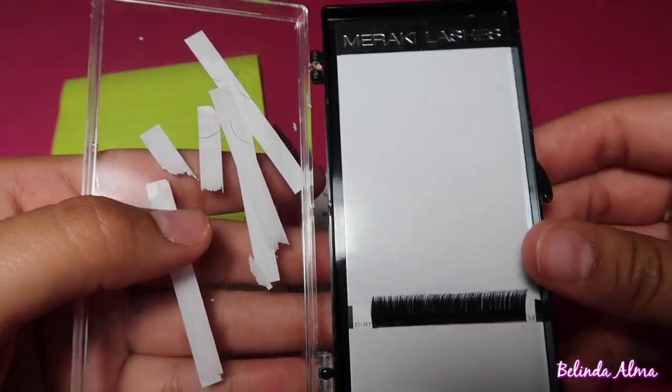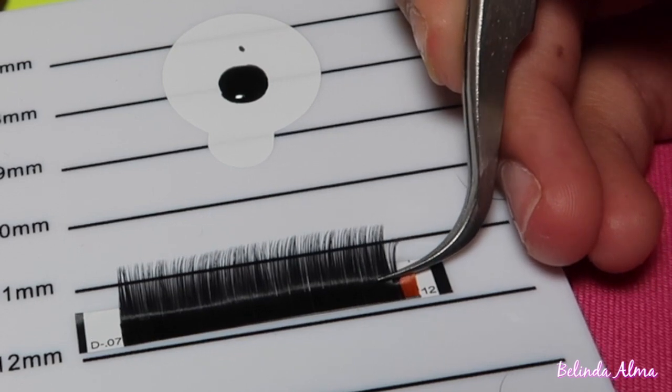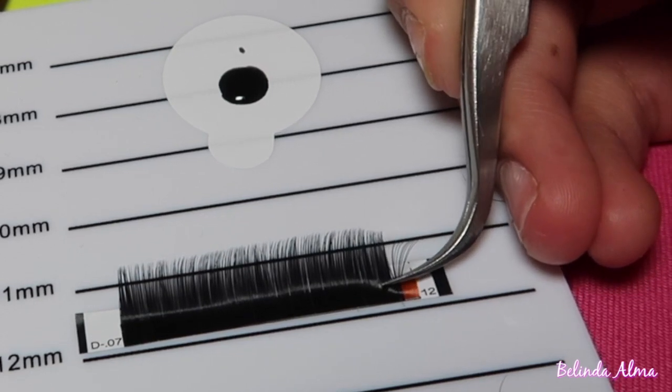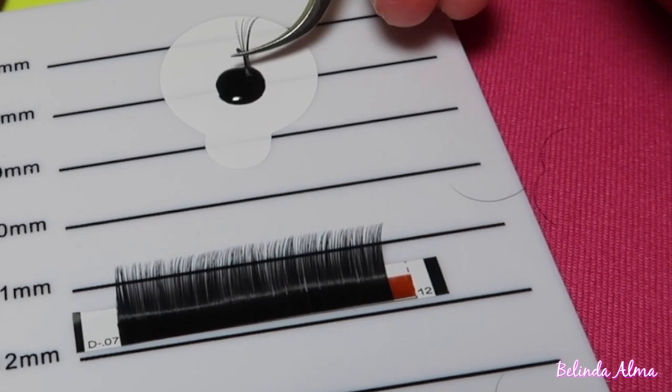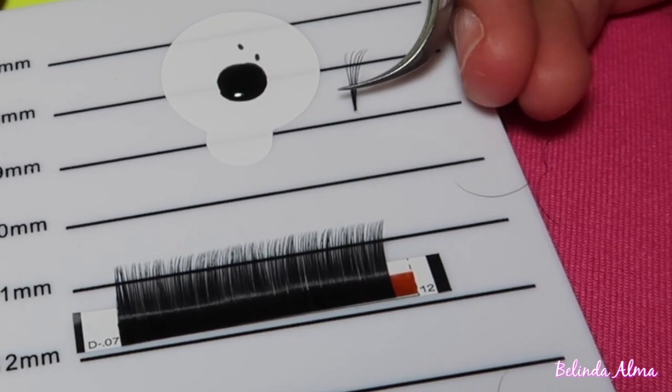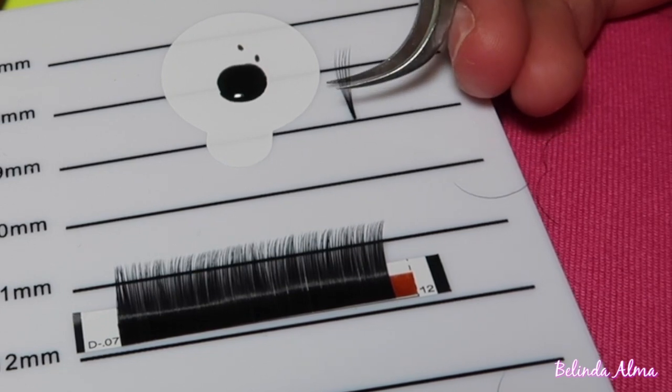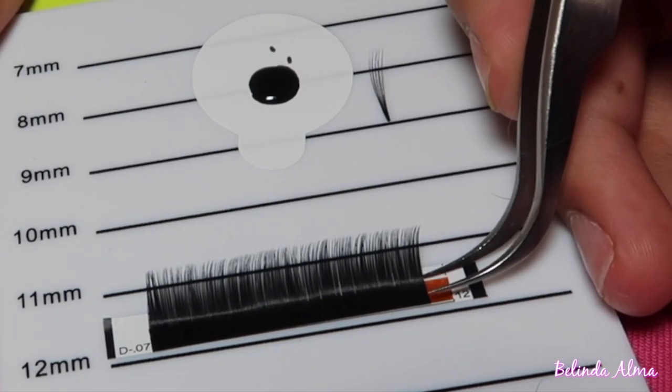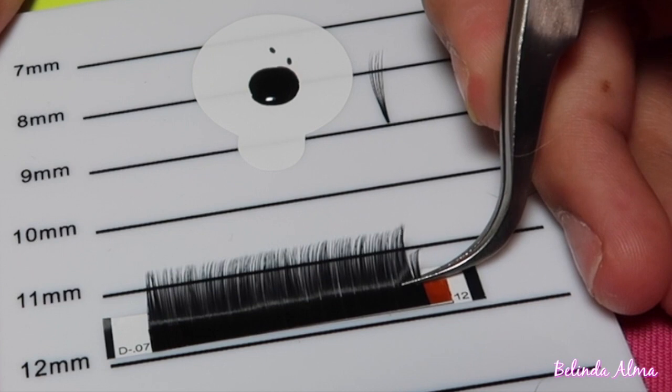What I do is I kind of just fan it out. I just grab the chunk that I want and then wiggle it back and forth, dip it in my glue, and place it down. Again, here I'm showing you guys how I'm wiggling it back and forth. This is how I make my fans.